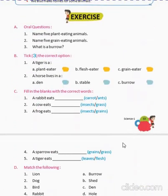Let's come to the exercise part. Name five plant eating animals: cow, goat, buffalo, horse, and deer are five plant eating animals. Name five grain eating animals: pigeon, sparrow, parrot, hand, quail — these are five grain eating animals.